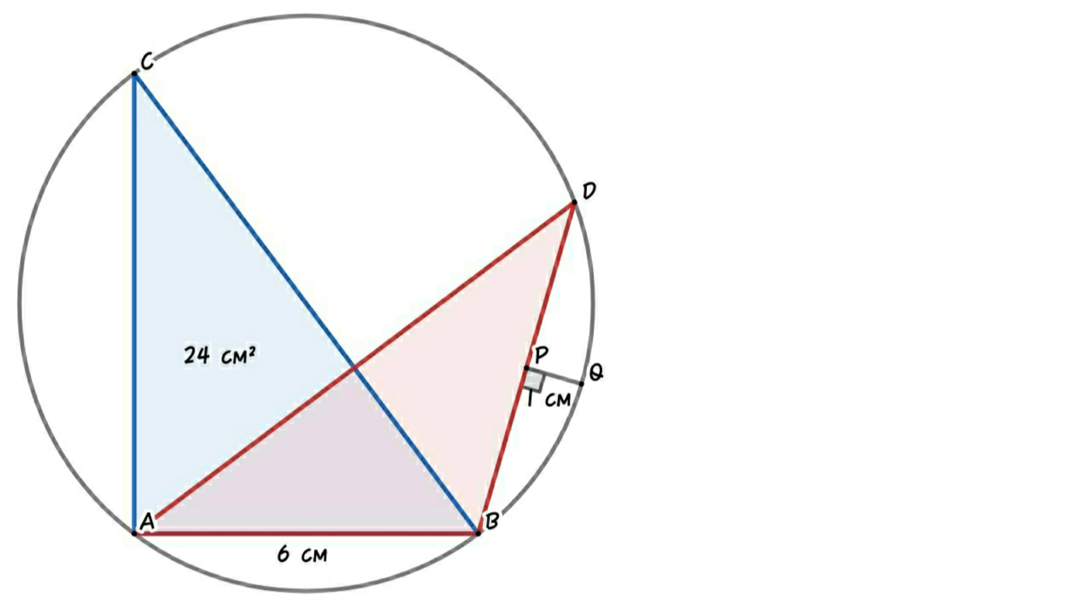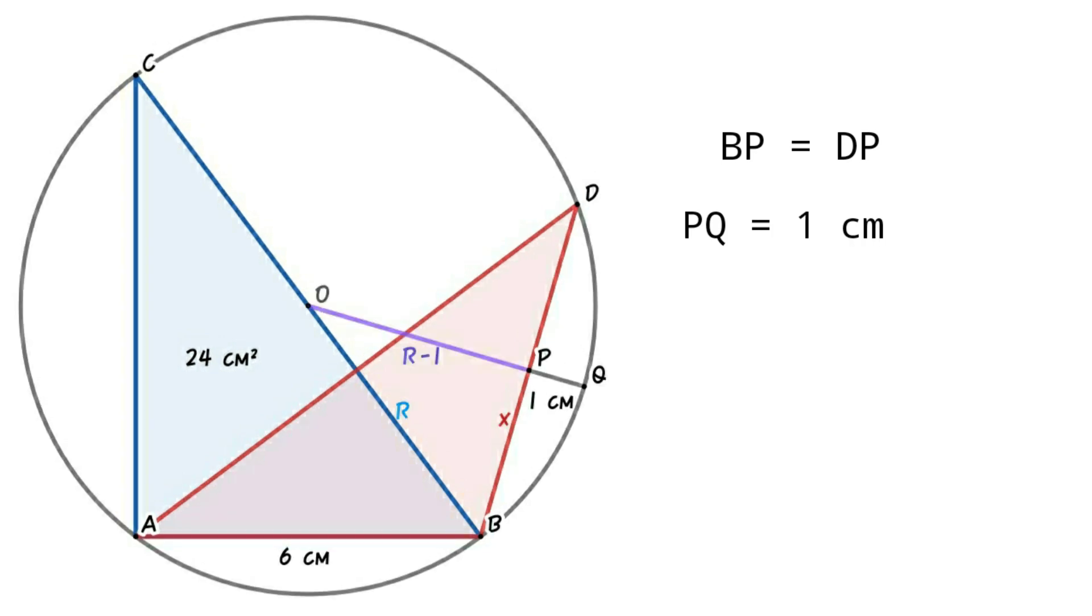The question says that P is the midpoint of BD. Then BP equals DP. Also PQ equals 1 centimeter. Connecting P and center O, we can create triangle POB. From triangle POB, OB equals R, OP equals R minus 1, and PB equals X.